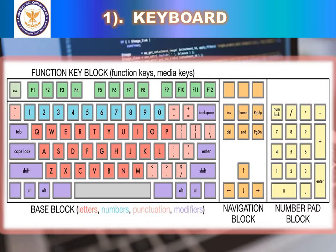The buttons on the keyboard are called keys. The keyboard contains keys for all alphabetic characters, numeric digits, special characters or symbols, and function keys. When a key is pressed, the keyboard converts the character into digital form and sends it to the computer. The most popular keyboard layout is QWERTY, because the first six leftmost keys on the top row of alphabets are Q, W, E, R, T, and Y.